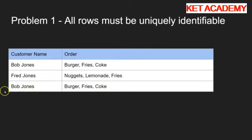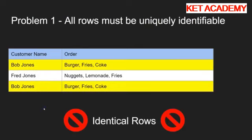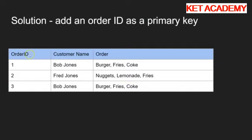Now that's fine, apart from we can't tell the difference between these two rows - we have no idea which order was ordered first. We need to change that because they need to be uniquely identifiable. The way we do that, nice and simple, is we just add an order ID column. Order ID 1 was Bob Jones, order ID 2 was Fred's, and order ID 3 was Bob Jones again. Because we've got these order IDs, that row is no longer identical to that other row. That's the first part of first normal form done.